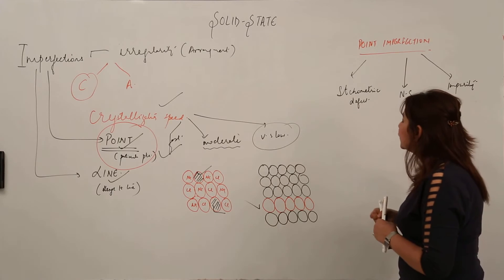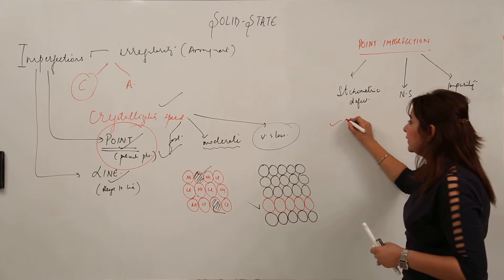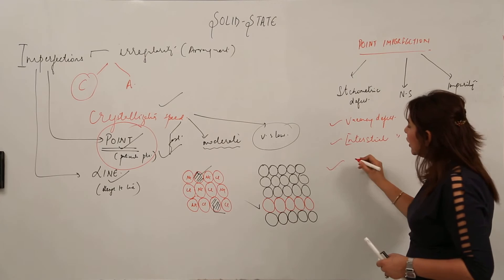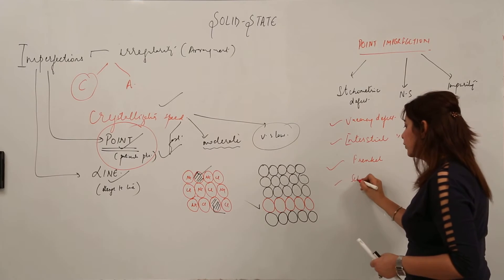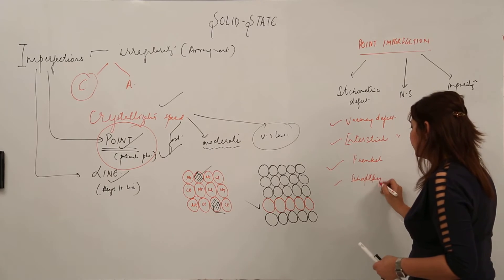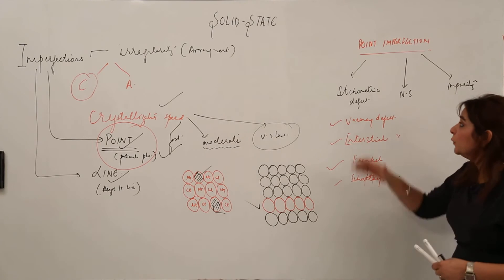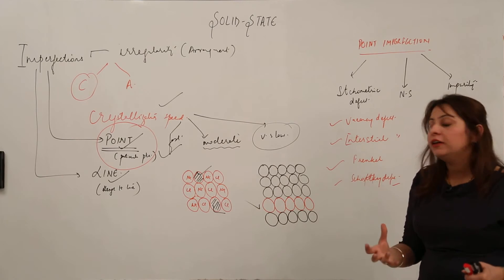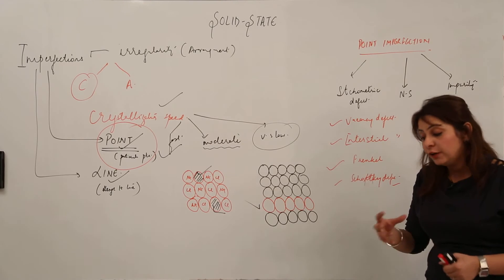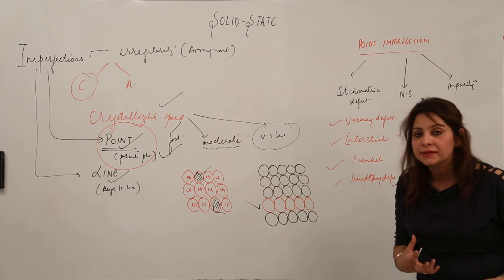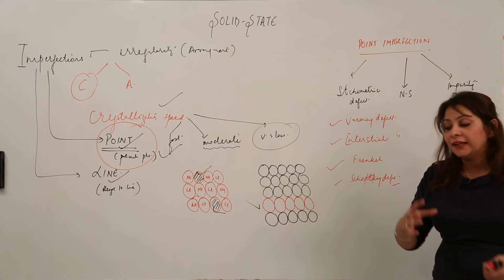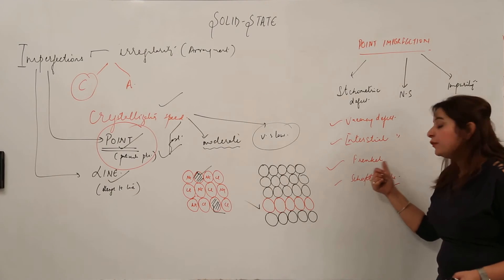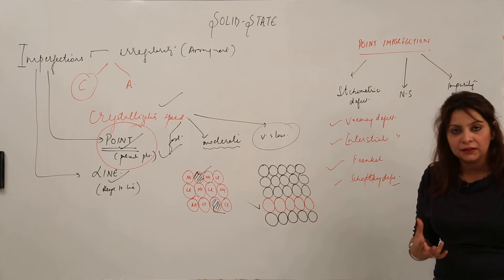In the case of stoichiometric defect, it does not disturb the stoichiometry of the crystal. It is divided into different defects: vacancy defect, interstitial defect, Frenkel defect, and Schottky defect. In vacancy defect, certain atoms are missing from their positions, giving rise to vacant spaces. In interstitial defect, extra particles occupy the interstitial sites between particles. Frenkel and Schottky defects are shown by ionic compounds and will be discussed in detail later.